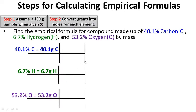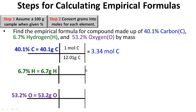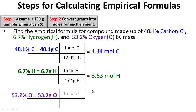Step two: convert grams into moles. One mole of carbon has a mass of 12.01 grams, giving us 3.34 moles of carbon. 6.7 grams of hydrogen divided by 1.01 grams per mole gives us 6.63 moles of hydrogen. 53.2 grams of oxygen divided by 16.00 grams per mole gives us 3.33 moles of oxygen.